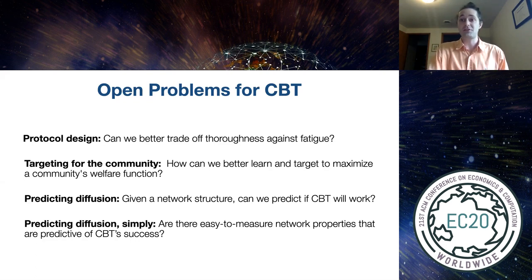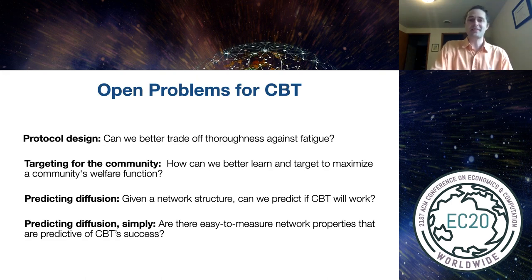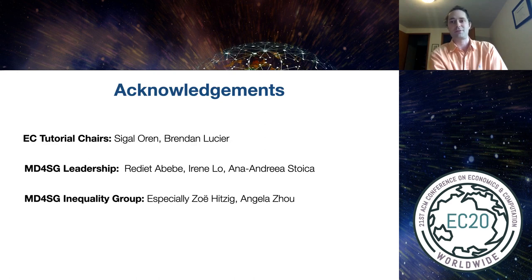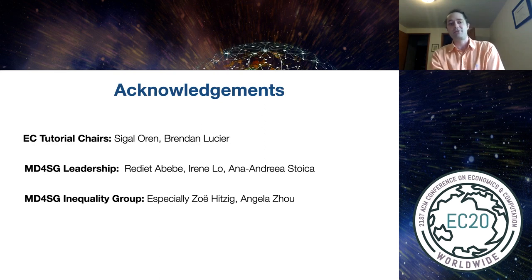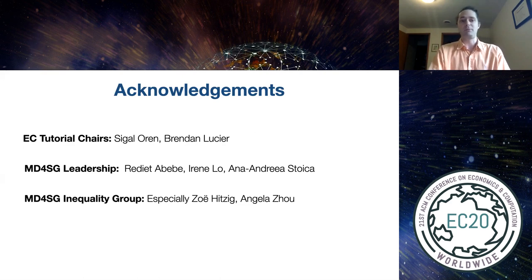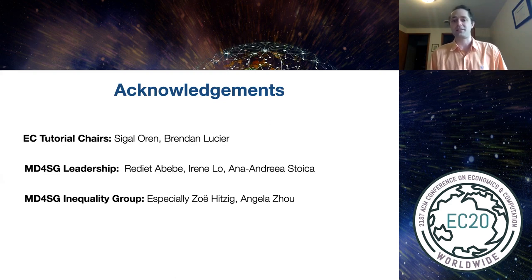To wrap up, there are a bunch of really interesting open questions related to these observations. On protocol design: could we better trade off the thoroughness of the learning done by our protocol against the fatigue from what is essentially query complexity? On the welfare function: if the community maximizes a different welfare function than proxy means testing, how can we better target to maximize a community's welfare function rather than one that comes from on high? On network structure: given the network structure, can you predict analytically or statistically whether community-based targeting will work well, or are there easier-to-measure network properties that are predictive of community-based targeting success? These are all really interesting questions that I think the EC community could make progress on. Special thanks to the EC tutorial chairs Segal and Brendan, the MD4SG leadership, Rediet, Irene, Andrea Stoica, and the MD4SG inequality group, especially Zoe Hitzig and Angela Zhao for paper recommendations.